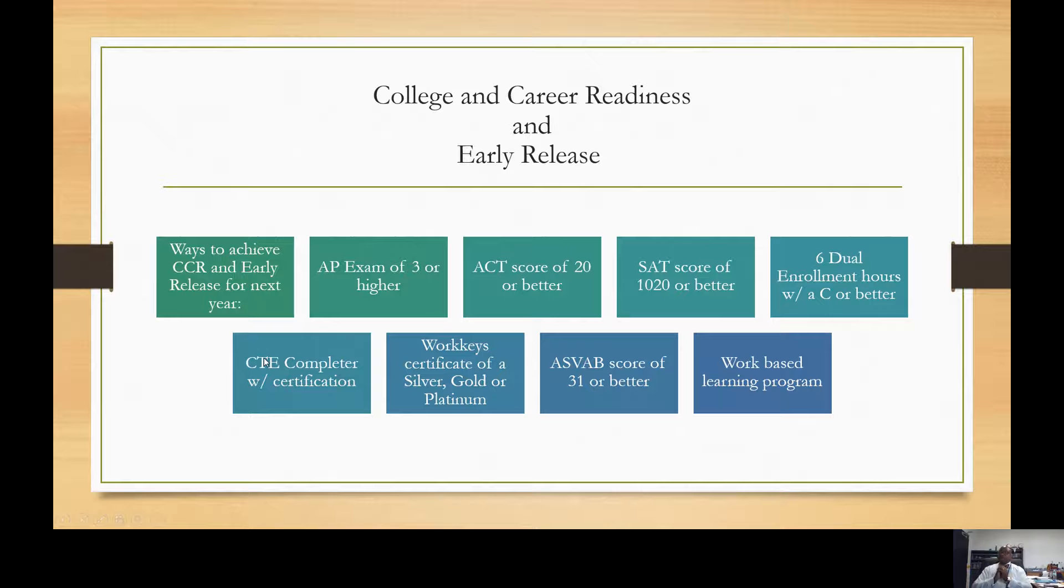Now, again, ways to achieve career and college readiness and early dismissal. AP exam score of 3 or higher, ACT score of 20 or better, SAT score of 1020 or better, six dual enrollment hours with a C or better.